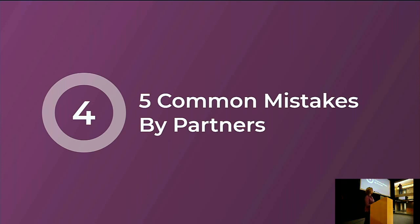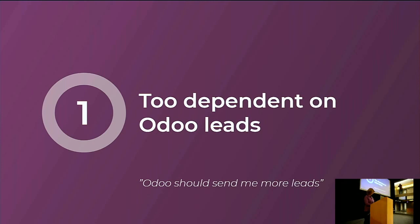Now, five common mistakes made by partners. The first mistake is being too dependent on leads from Odoo. We encourage partners to be as active and independent as possible — that's how they grow faster. Leads that we pass to you should be considered a bonus to help you reach your KPIs, but it's really important that a partner stays active and maintains a hunting mindset.